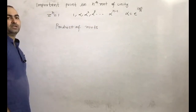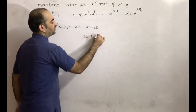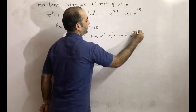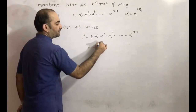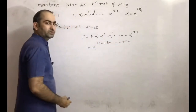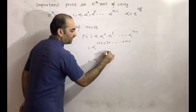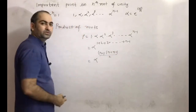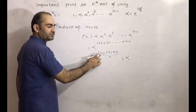For the product of roots, we multiply directly: P = 1 · alpha · alpha² · alpha³ · ... · alpha^(n-1). This equals alpha^(1 + 2 + 3 + ... + (n-1)), which is alpha^(n(n-1)/2).